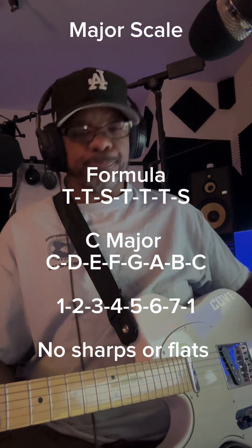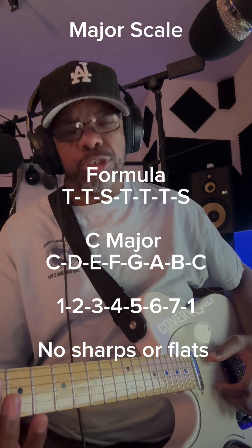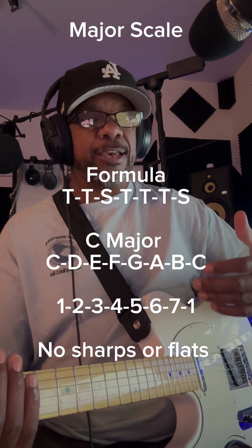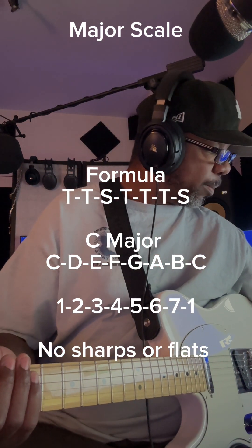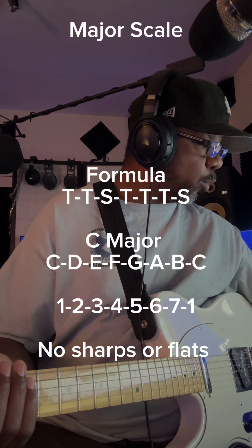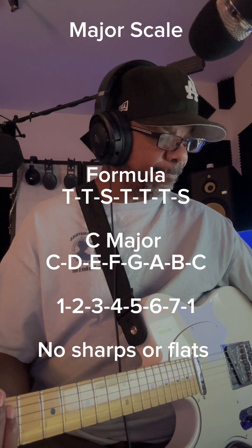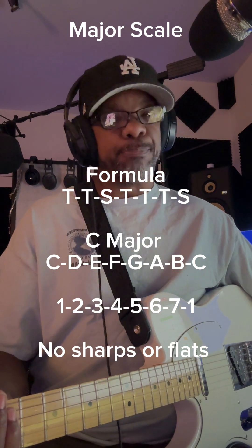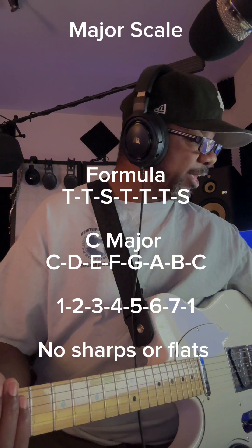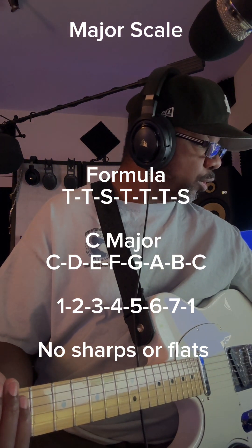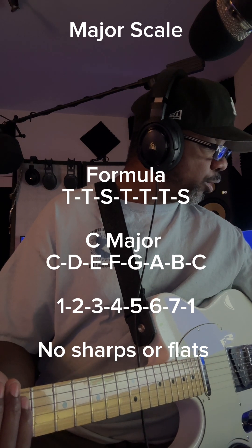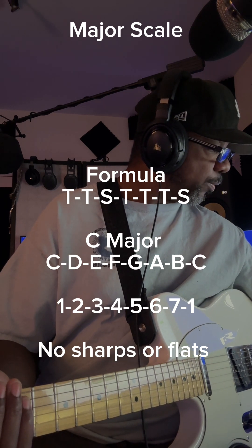Now, those notes work that way because of the formula. I'm going to give you the formula. It's a tone away. This has to do with the spaces between the notes. It's called the interval between the notes. So, it's tone, tone, semitone, tone, tone, tone, semitone.